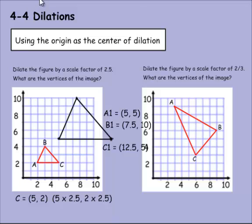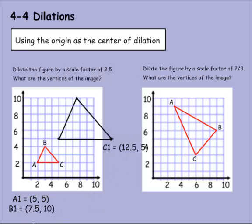To check if it was a dilation, we go from the center of the origin with a ruler, pass through A. Does it also go through A1? It does. Pass through B. Does it go through B1? This one does as well. Pass through C. Does that go through C1? This one's a little off because I guessed, but that's pretty close too. The vertices of the image are A1 is 5, 5, B1 is 7.5, 10, and C1 is 12.5, 5.